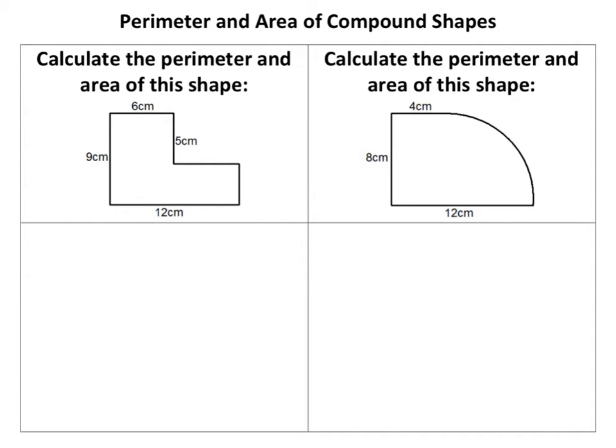Okay, we are looking at perimeter and area of compound shapes. Now compound shapes are essentially lots of different shapes that you know and recognize all stuck together to make another shape.